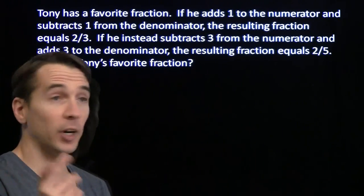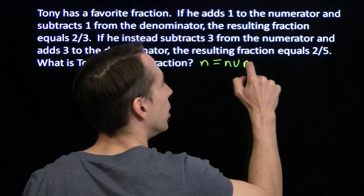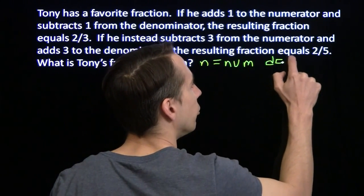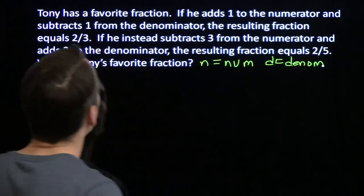We'll start off with some variables. And as usual, we use obvious variables. N is the numerator. D is the denominator.